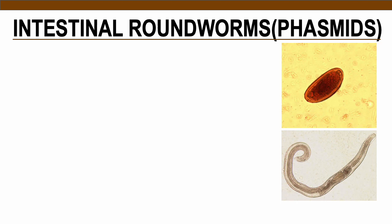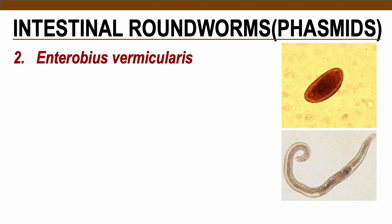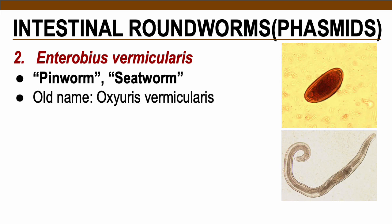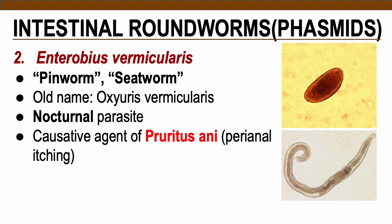The next intestinal roundworm under phasmid is Enterobius vermicularis, also known as pinworm or seatworm; the old name is Oxyuris vermicularis. This is considered a nocturnal parasite because female adult worms lay their eggs on the perianal region of the patient during nighttime. It is the causative agent of pruritus ani — perianal itching — which is the main pathology of this parasite.